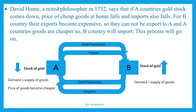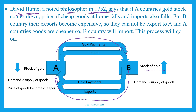David Hume was a philosopher in 1752. In this situation, if a country exports, it receives gold payment, and the gold stock increases. Gold stock means gold coins held by the public. People increase purchasing and demand. As demand rises and supply of goods stays the same, the price of goods and services will increase in that country.